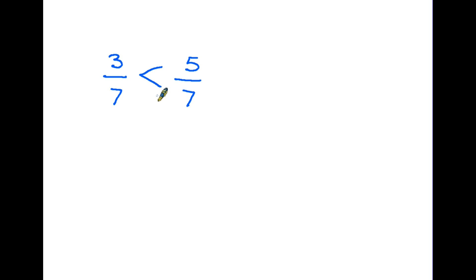Here we've got three of them, there we've got five of them, so this would be the largest fraction and our answer would look like that. Three sevenths is smaller than five sevenths.